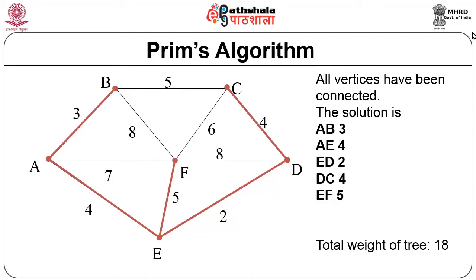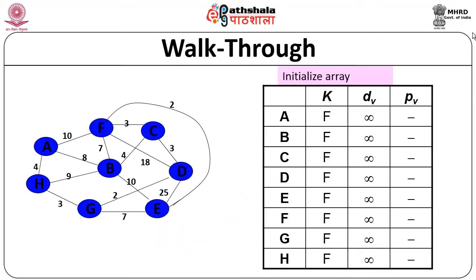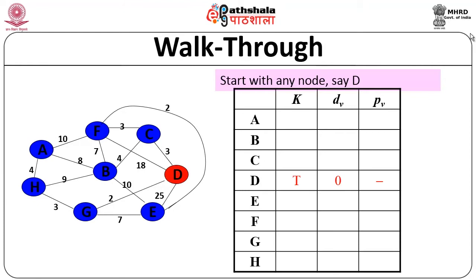Now let us go for a walk-through. First we have an initial array which contains all the nodes — A, B, C, D and 8 nodes in total. K indicates whether a node has been selected (initially false), we keep the label as infinity, and we have P-V which indicates the parent vertex. This is the initialization of the array that we are going to use for this particular algorithm. You can select any node; let us assume we start with D.